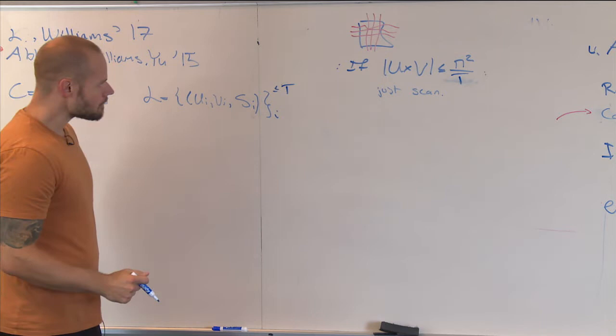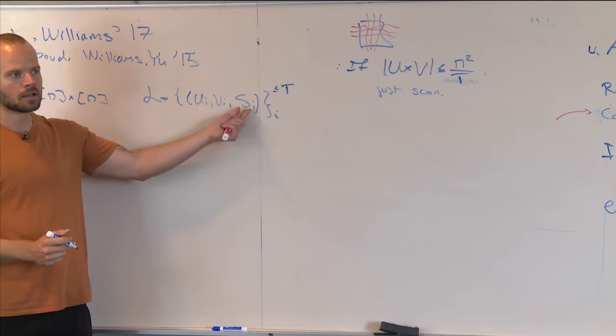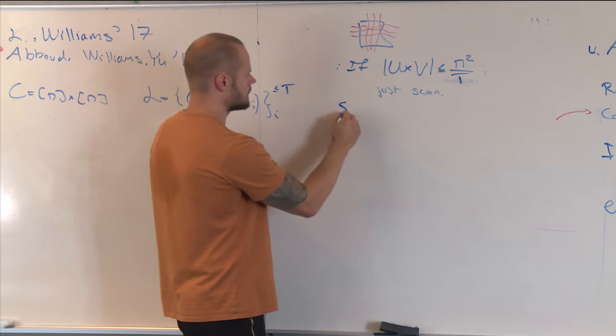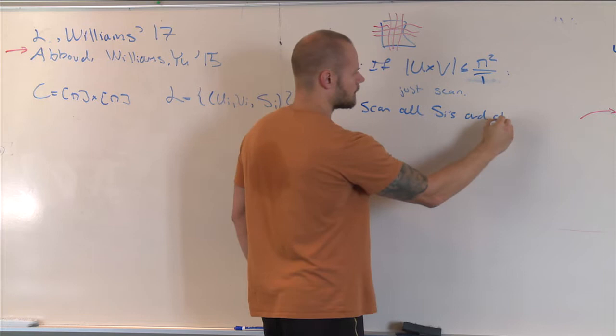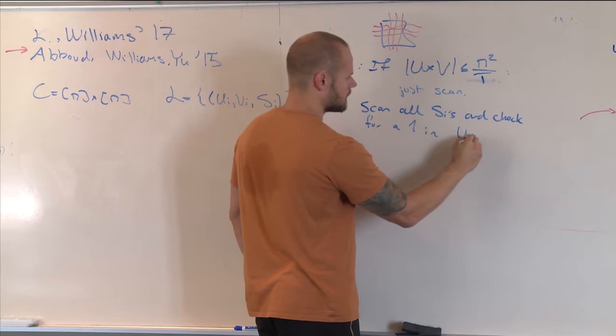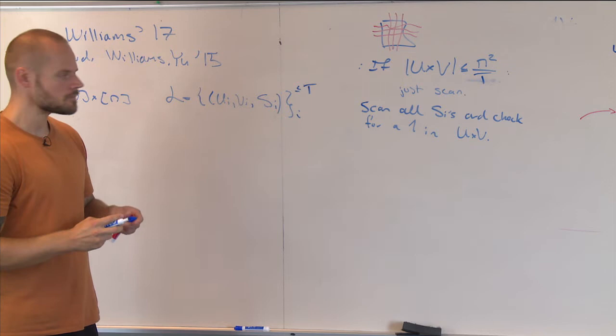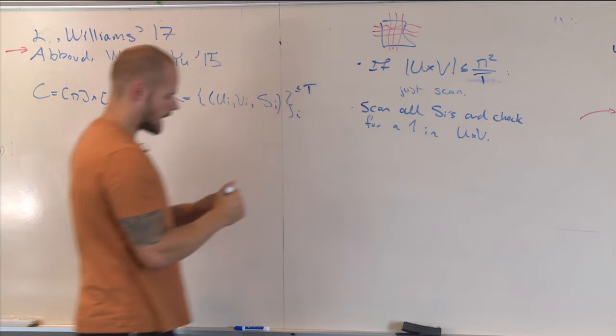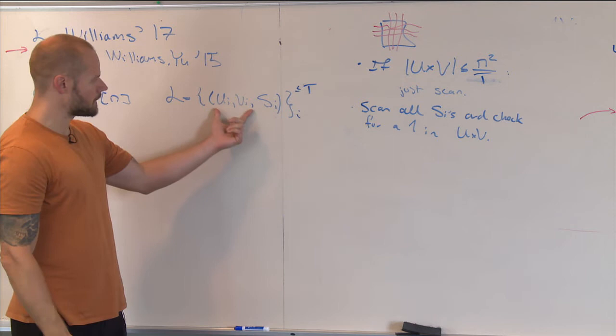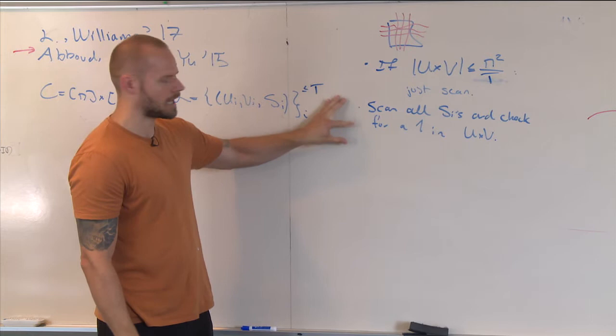If it's not small, we also have this list where we store some of the ones in the matrix. We scan all Si's and check for a one in U×V. If we find one, we're done — we've answered the query. After scanning, we know that the query cannot have a one inside any of these extracted submatrices, because we scanned all the ones that ever occur in any of them. So we're still down to looking at set Q.